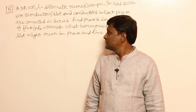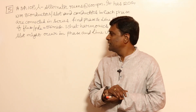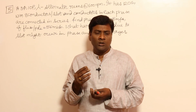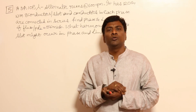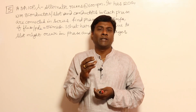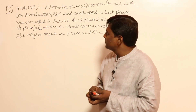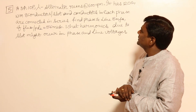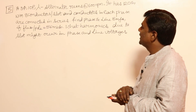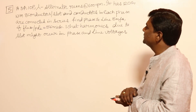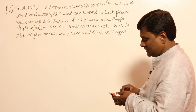In this problem, let us calculate induced voltage. From this problem onwards we will come to know how to calculate distribution factor, pitch factor, and induced voltage — how many number of turns there are per phase, series connected turns and so on. A three-phase, 10-pole, star-connected alternator runs at 600 RPM. It has 120 slots with 8 conductors per slot, and conductors in each phase are connected in series. Find phase and line EMFs if flux per pole is 56 mWb. What harmonics due to slots might occur in phase and line voltages?